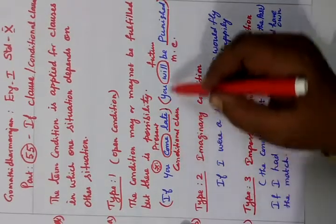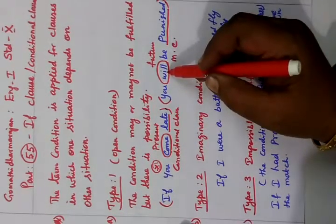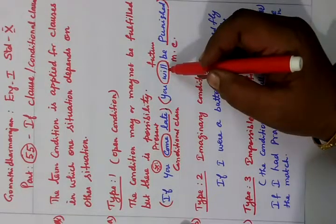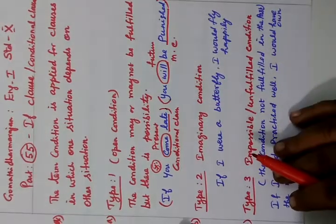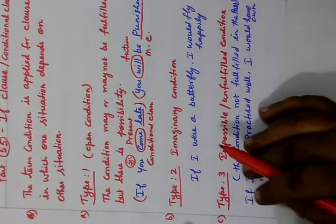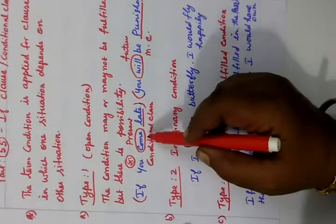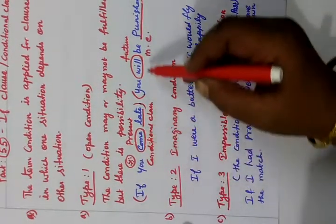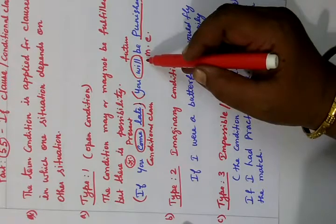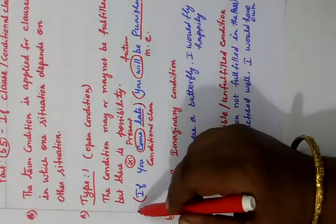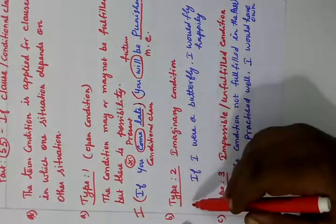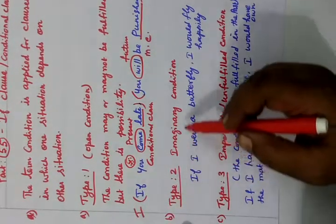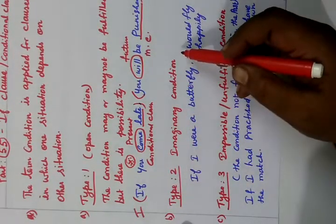Past tense in the conditional clause gives 'would' in the main clause — that is Type 2. So: Type 1 uses present tense and future tense; Type 2 is the imaginary condition.